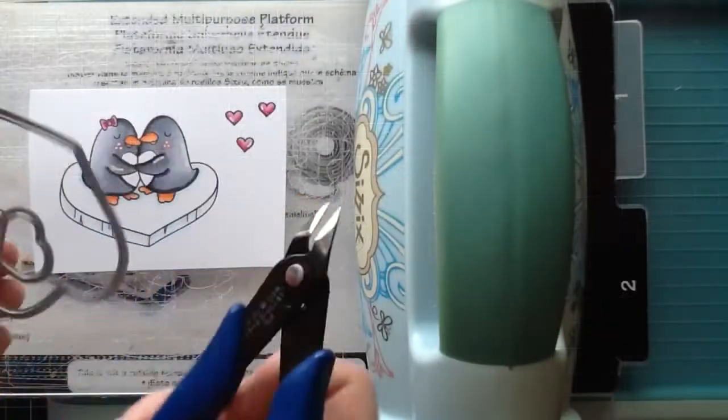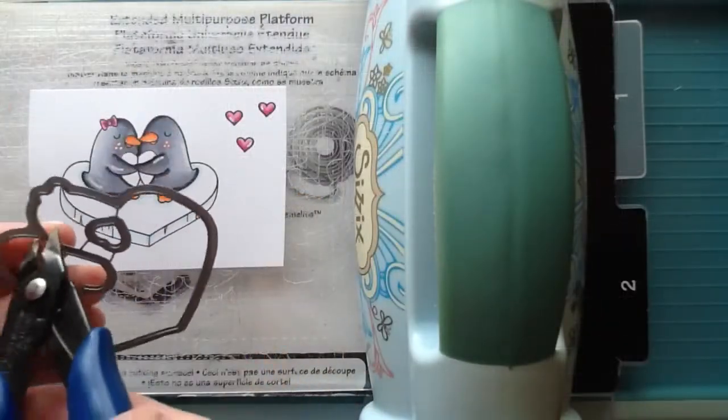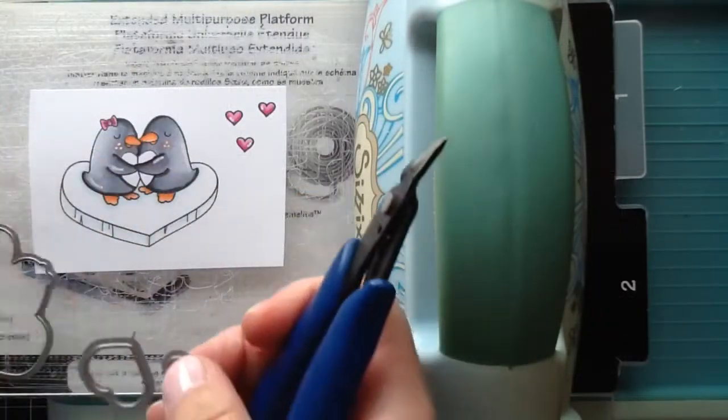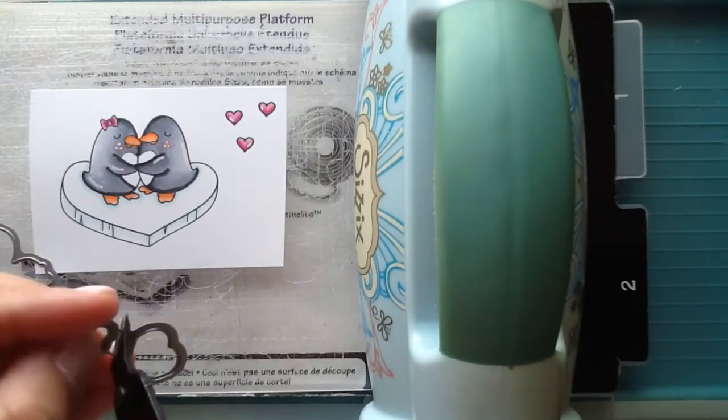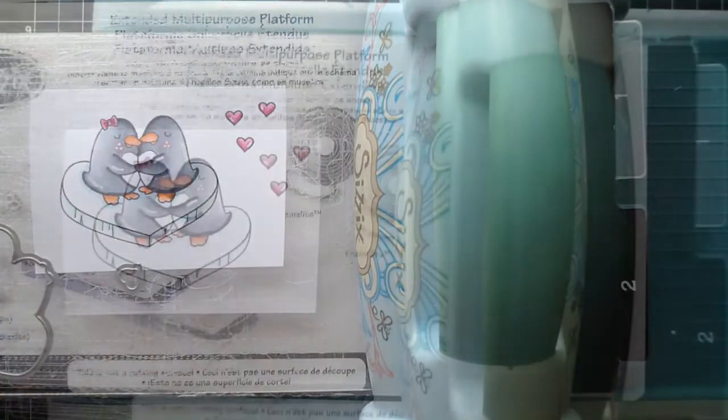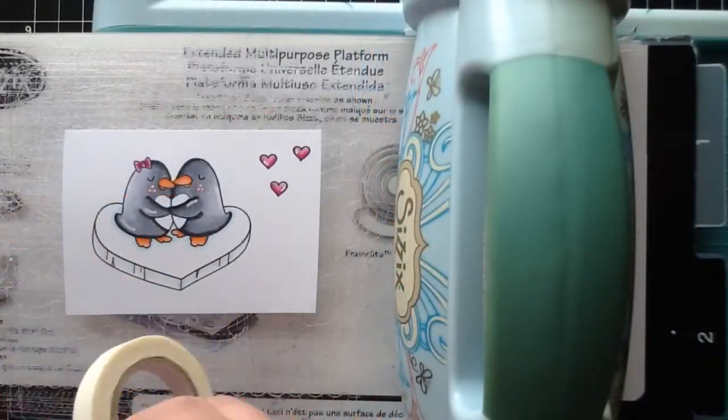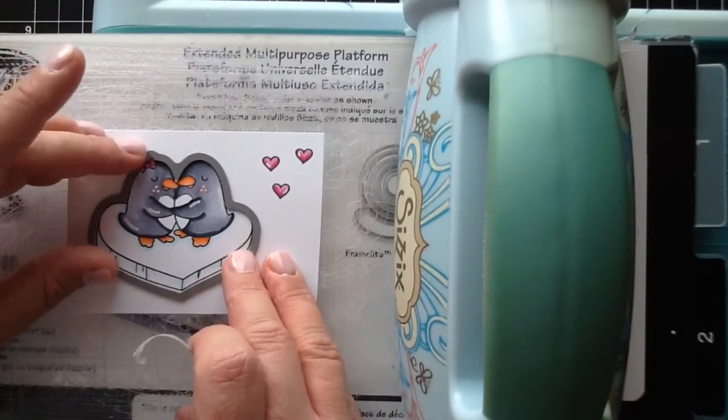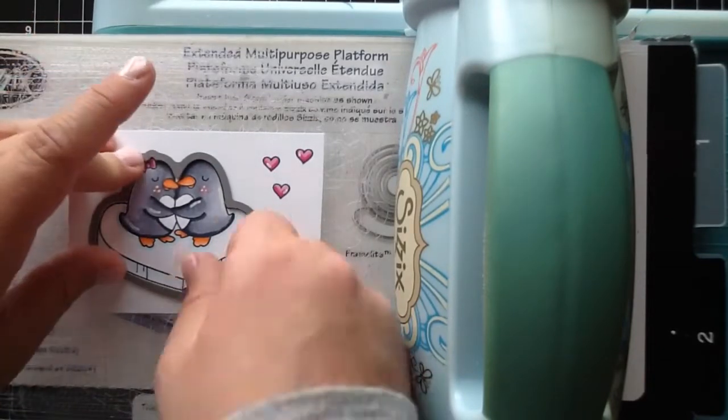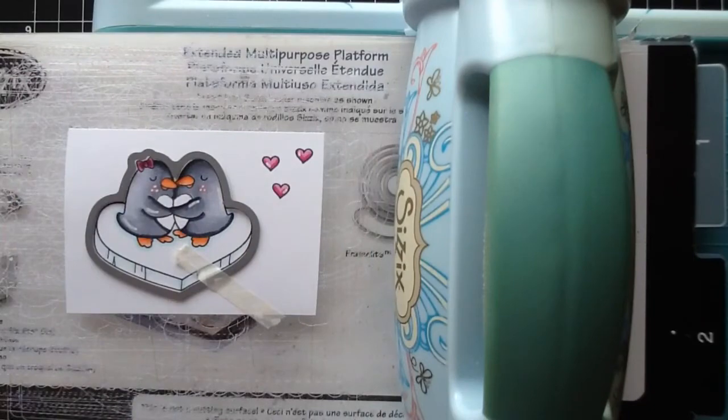Using the Posca pen, I'm adding a little accent on each of the hearts as well. Then I'm taking my wire snips and coordinating dies. I'm trimming them apart and I'm going to use this one for the image, and they also have one for that little tiny heart. I'm using washi tape to hold down the coordinating die there, and also for that little tiny heart.